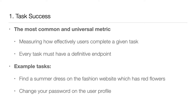An example could be finding a summer dress with red flowers on a fashion website, or changing your password on the user profile. Did you do it? Was there something in the design which meant you could not achieve that task? Simple yes or no. If anything has a no, this is a red flag — fix it straight away before looking at anything more advanced. It has to work.